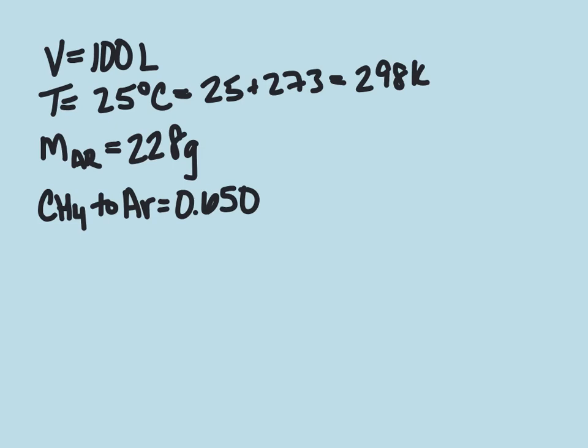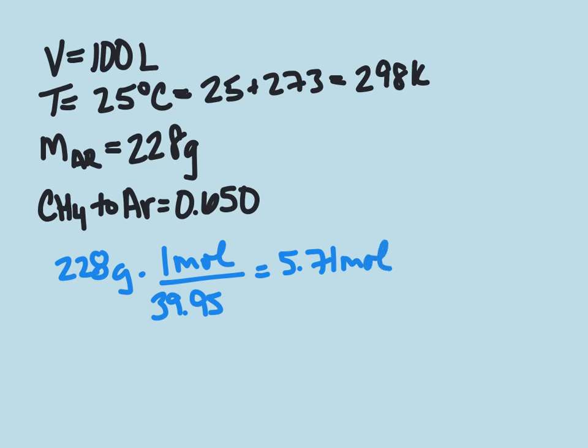At this point now, we want to find how many moles of argon we have. So our molar mass of argon is going to be the 228 grams times 1 mole divided by the molar mass of argon, which is 39.95, which gives us 5.71 moles of argon.